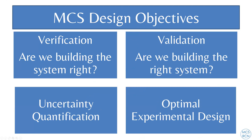The MCS has several design objectives: verification — are we building the system right, solving the equations correctly?; validation — comparing modeling efforts against data to check if we're building the right system and solving the right equations; uncertainty quantification, very important when thinking about hazard mitigation in a probabilistic sense; and optimal experimental design — an important point where modeling can be part of the 'phase zero' or 'phase one' steps of an observational-based research program, helping to decide where to focus instrumentation efforts.